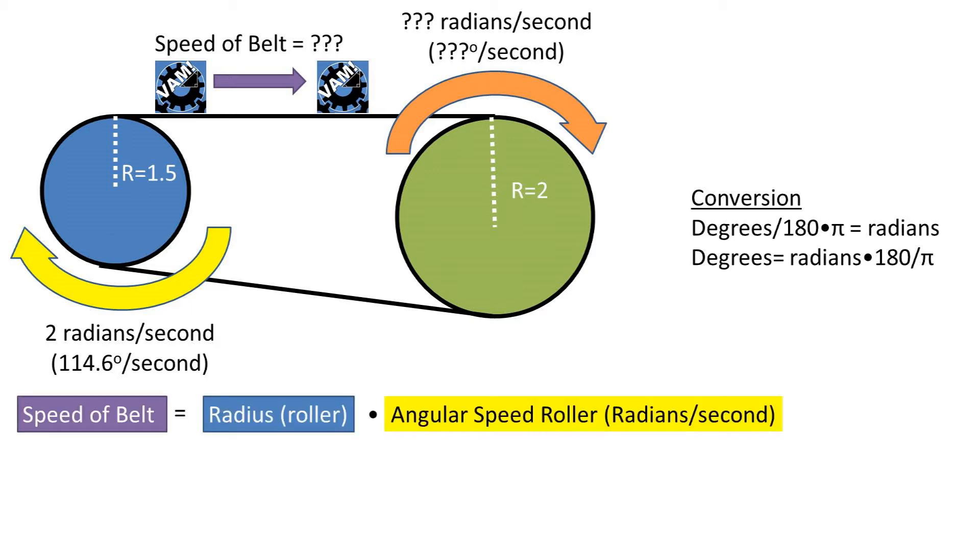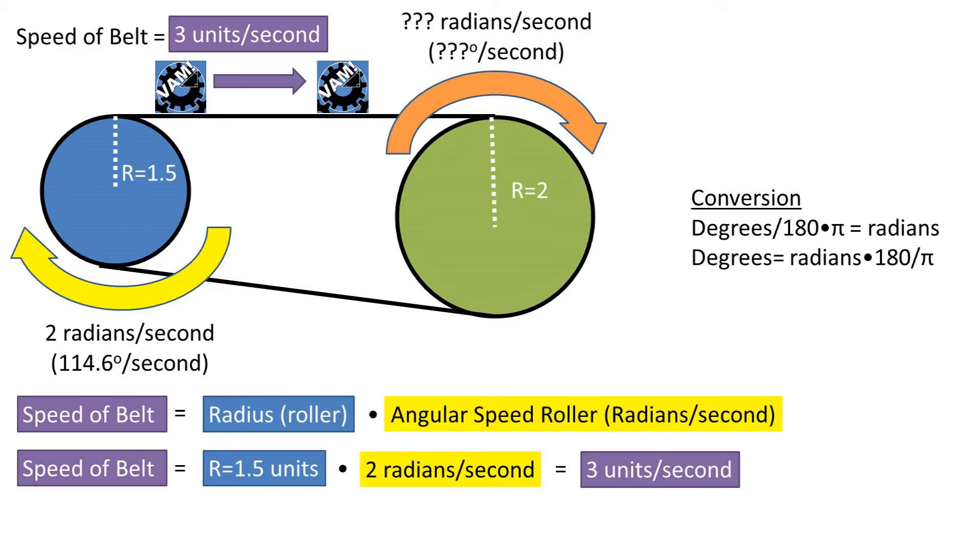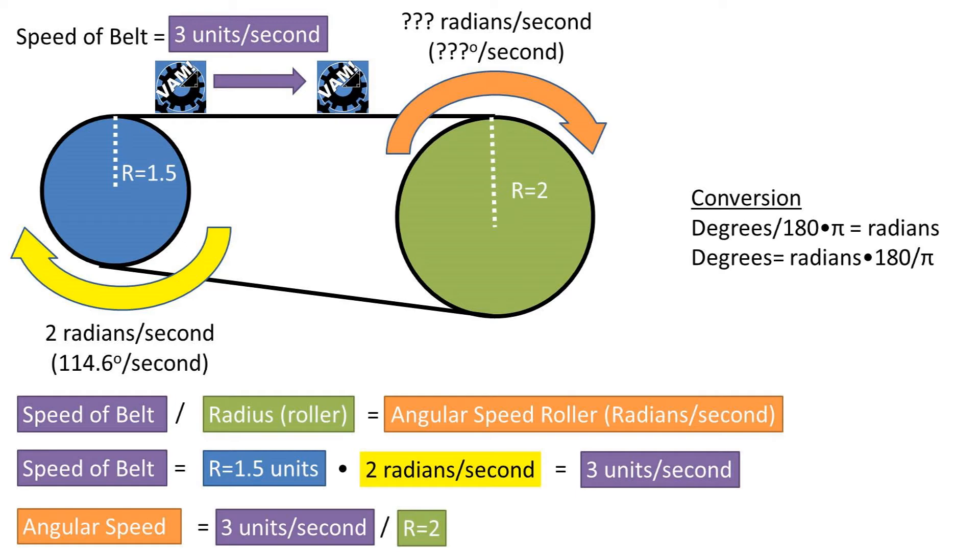The formula for the speed of the belt is the radius of the roller times the angular speed of the roller in radians per second. Plugging in our values and pressing enter in our calculator, we get a speed of the belt of 3 units per second.